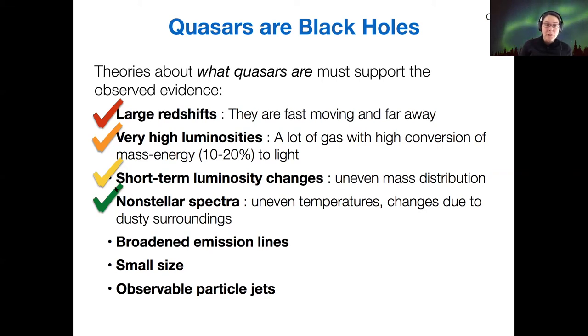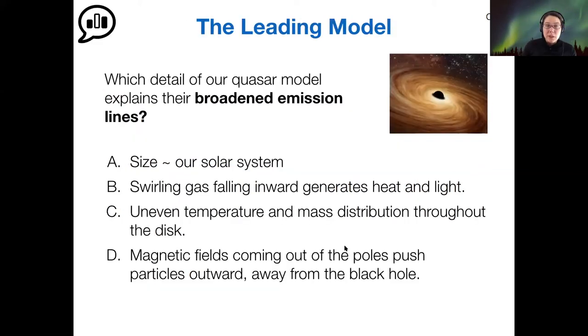That's the non-stellar spectra. So when I'm thinking of non-stellar spectra, this flattening out of the stellar spectrum is part one. But there's actually other light that comes from the particle jets. So I'll talk about those at the very end here. So the next piece of evidence we want to explain is our broadened emission lines.